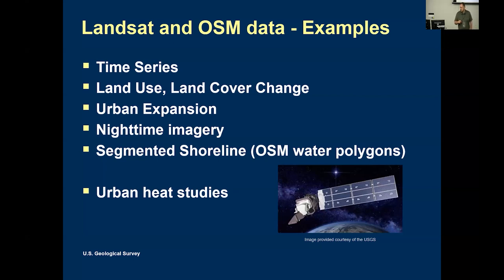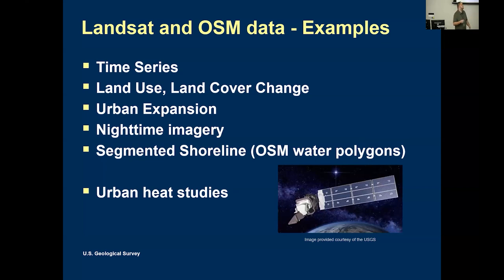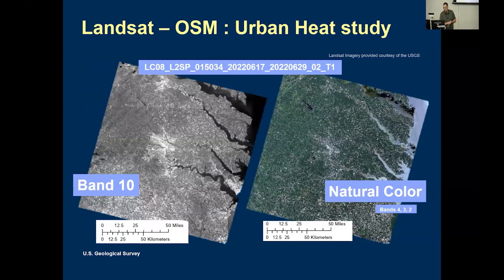I wanted to do a quick walkthrough of urban heat studies — this is a demonstration, not a formal study. It's to show the benefits of pulling that heat data out so you can pull it into a program with OSM data, and rather than just seeing areas, you can take a look and say, hey, something's up with that building, it's got a very high temperature. I put the ID of the scene we're looking at so if you want to replicate this, it's an easy way to find it.